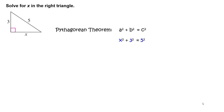You will get x squared plus 3 squared equals 5 squared. Evaluate the exponents to get x squared plus 9 equals 25. Subtract 9 from each side of the equation. Simplify to get x squared equals 16. Take a positive square root of each side of the equation.